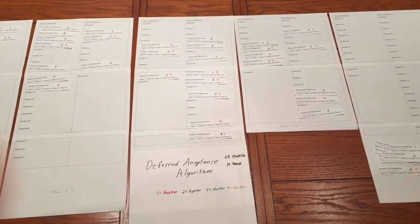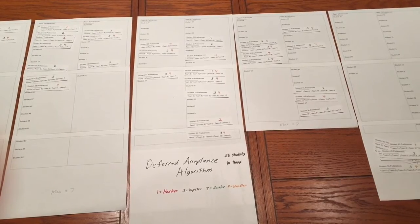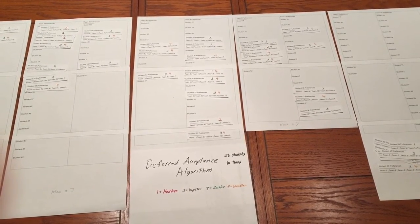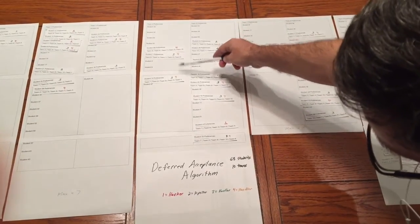In Phase 2, any teams that are too large, we're going to restrict them down to a maximum. In Phase 3, we're going to take any orphans and fill them in to teams that may be too small.